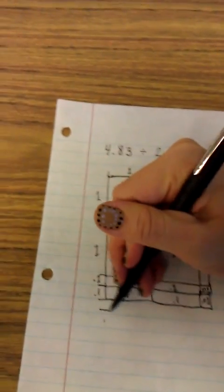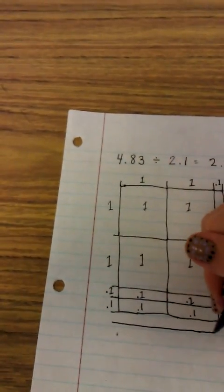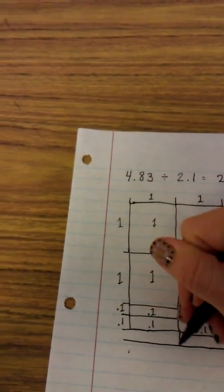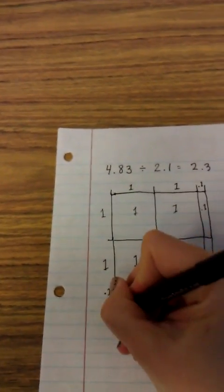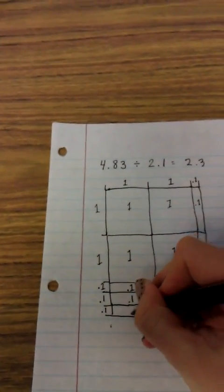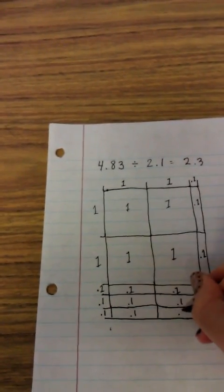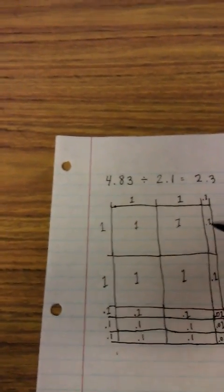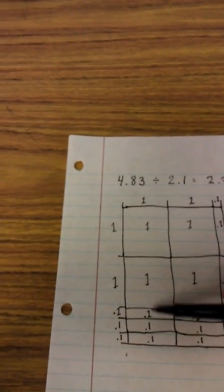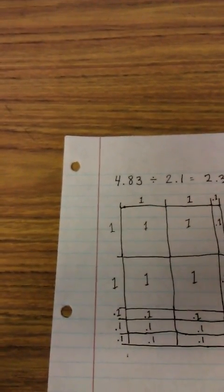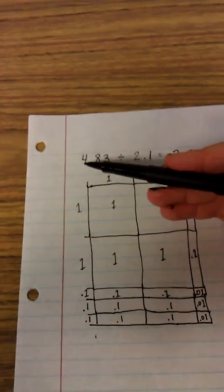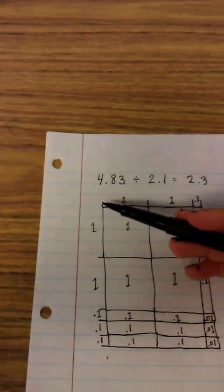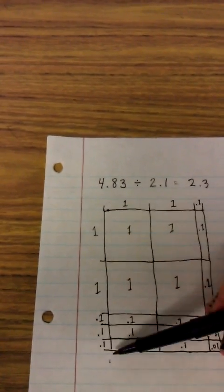I just multiplied by a tenth which would be one tenth, one tenth, and one hundredth. So now I have four and eight tenths and three hundredths which is 4.83. So my answer is this factor right here.